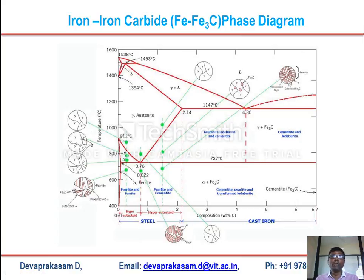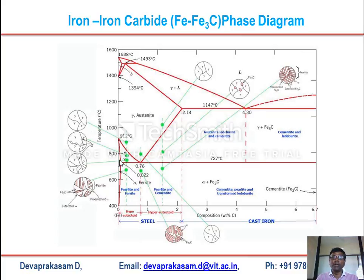When you heat iron at different temperatures you will encounter various phases. If you add carbon in weight percentage slowly, you will get various phases — that is what is represented in the iron–iron carbide phase diagram, otherwise called the Fe–Fe₃C phase diagram.